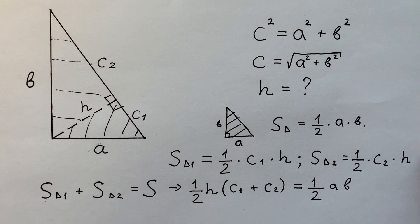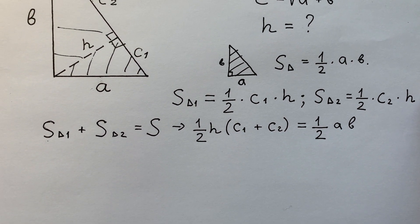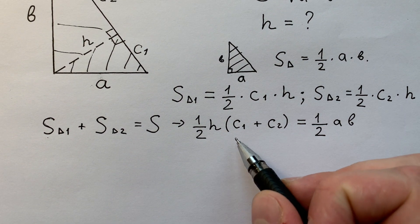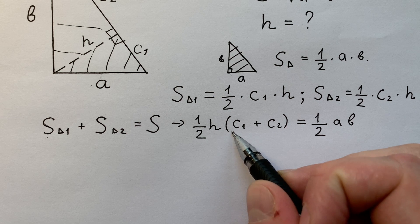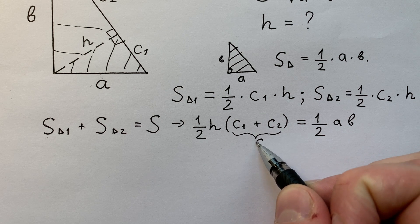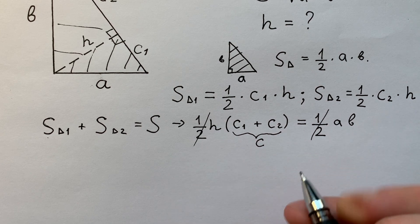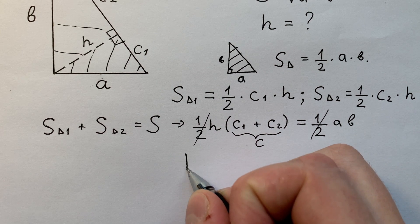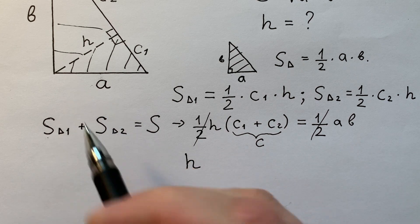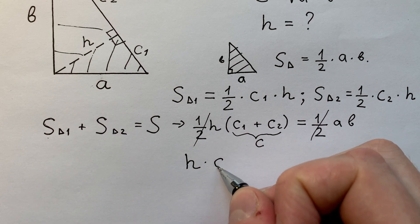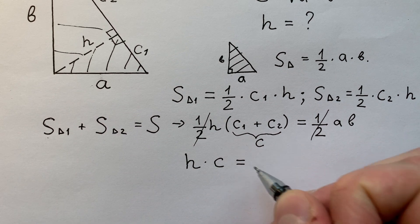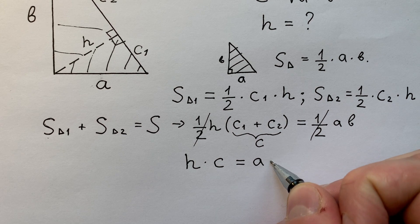Look at the last equation. What can we understand from this? We know that C1 plus C2 equals C, the hypotenuse. One divided by two is common. So we get that H, the height of the triangle, times C equals A times B.